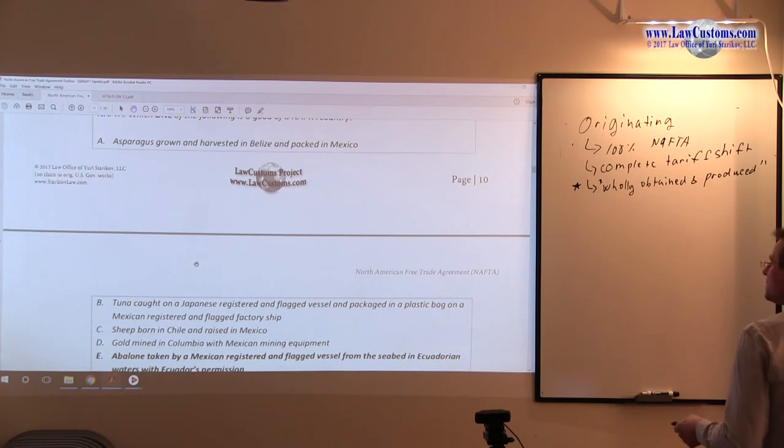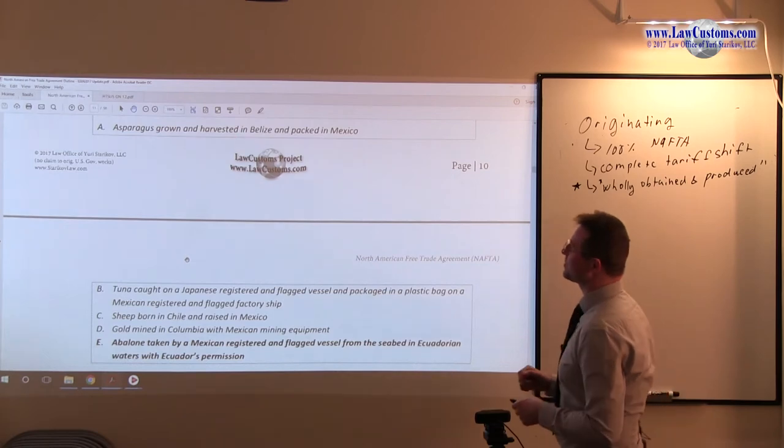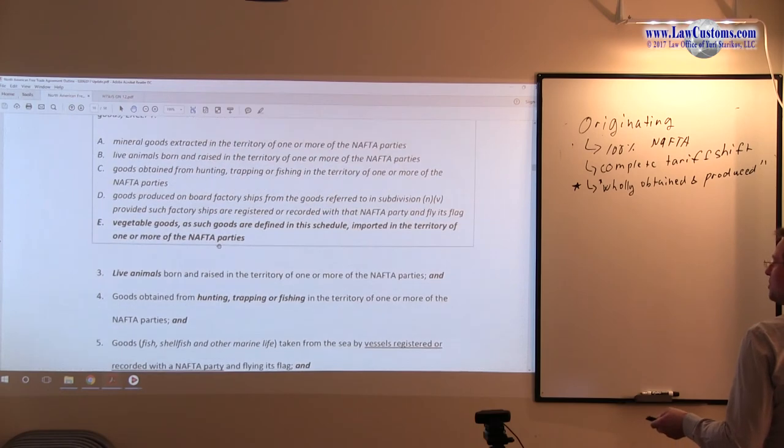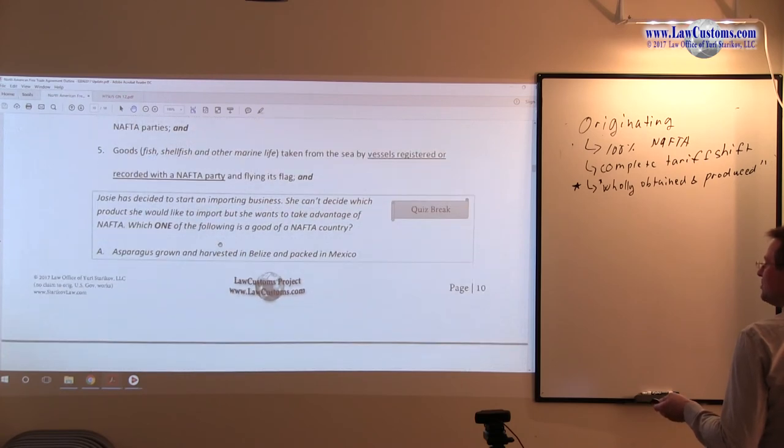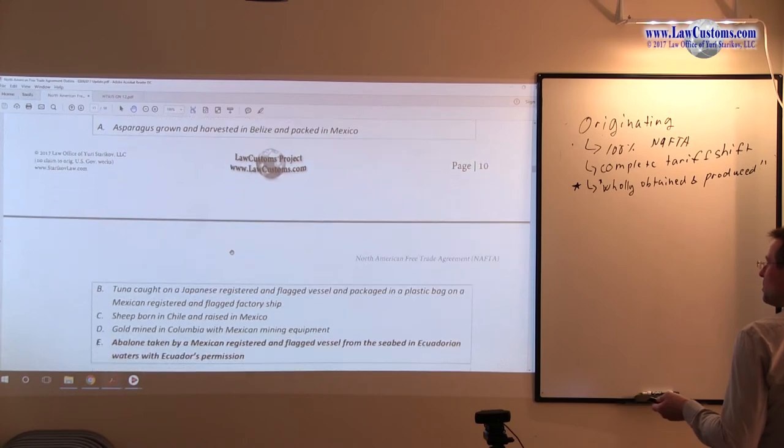So you have asparagus grown and harvested in Belize and packed in Mexico. Asparagus is a vegetable product, and vegetable product must be harvested in the territory of NAFTA party. And Belize is not a NAFTA party, Mexico is. So packing it in itself will not do any good. Harvesting must be done in Mexico. And because of this, because Belize is there, Belize itself disqualifies asparagus from NAFTA application.